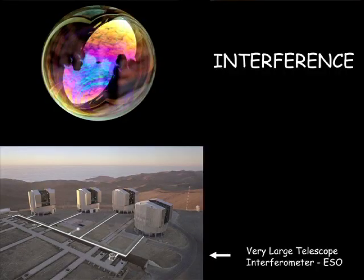It's like using many smaller telescopes as one single, much larger telescope. Now, in order to understand in detail how this works, we need a little bit more physics than what you know right now. So I will leave this for the future, and for now you should just keep in mind that this is possible just thanks to interference - the same phenomenon that occurs at the surface of soap bubbles.